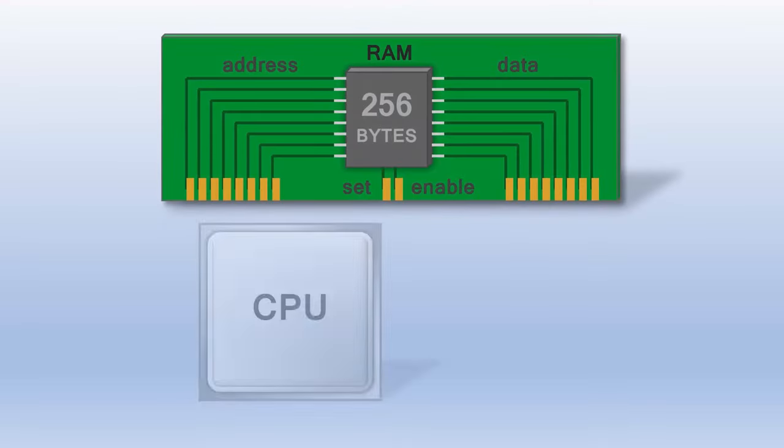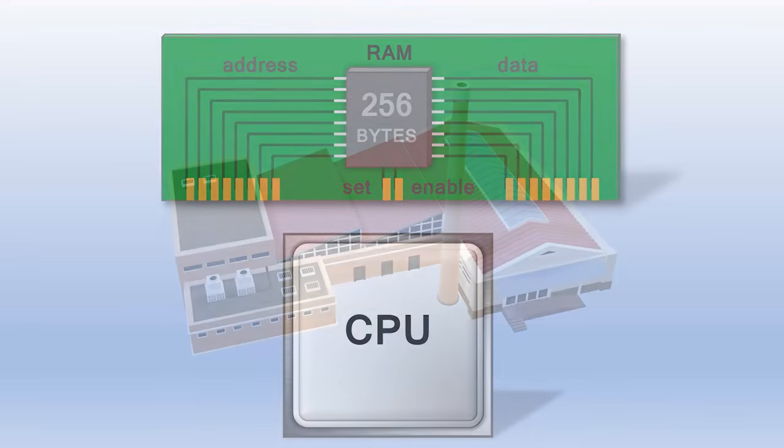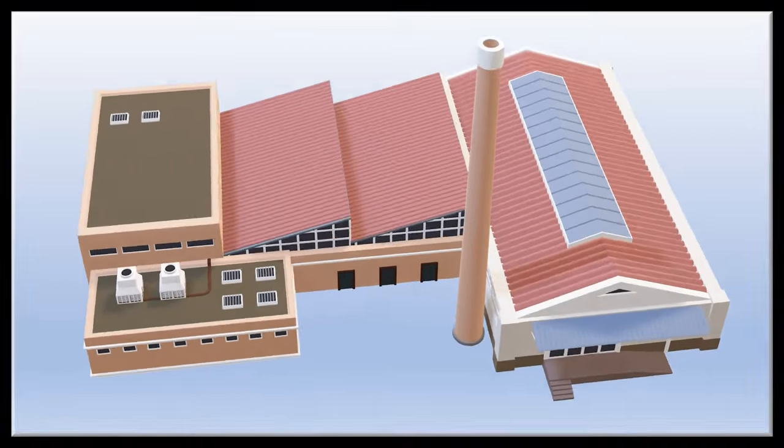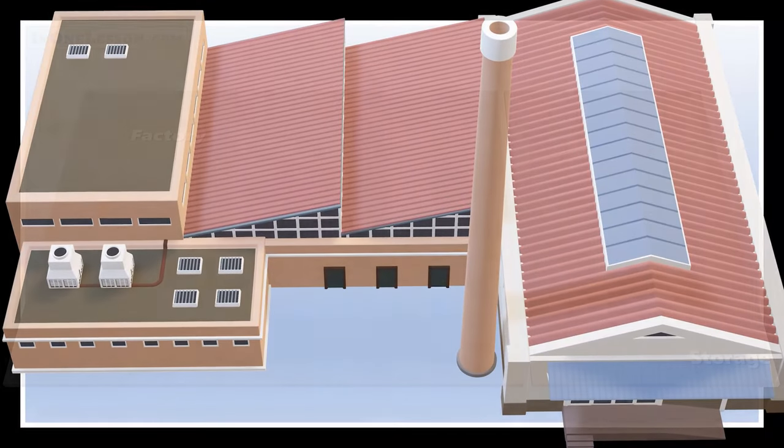A program is stored in RAM and run by a CPU. The CPU is like a factory and RAM is like the storage building connected to it.